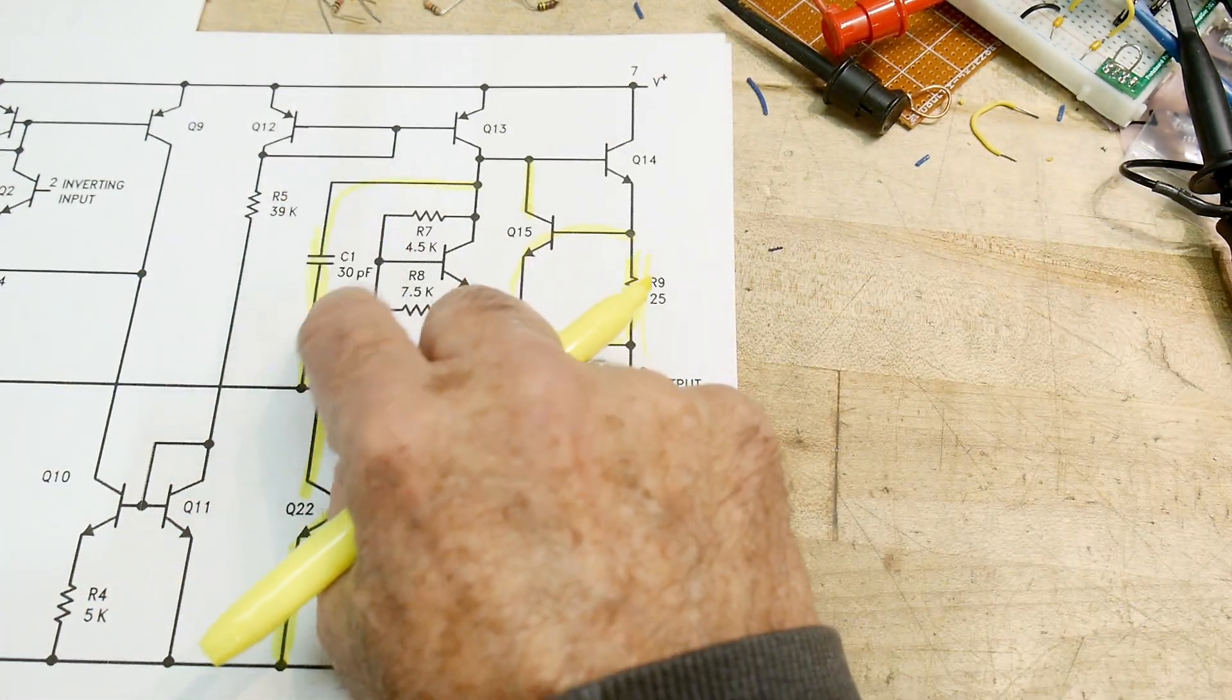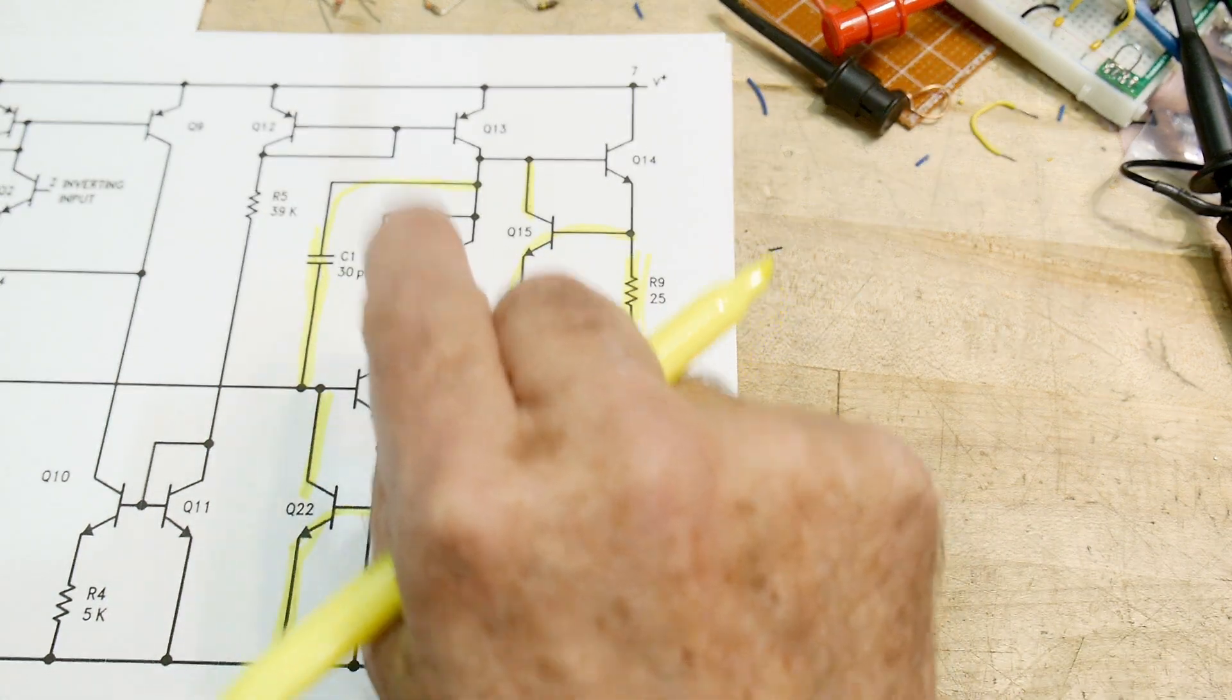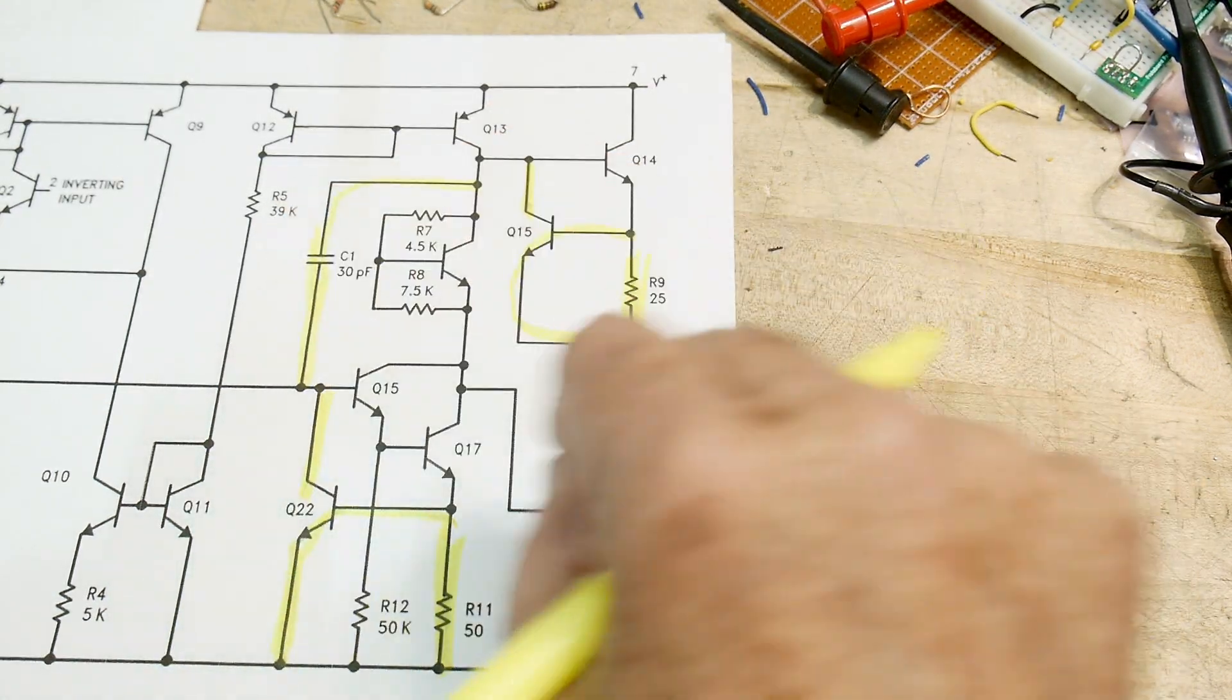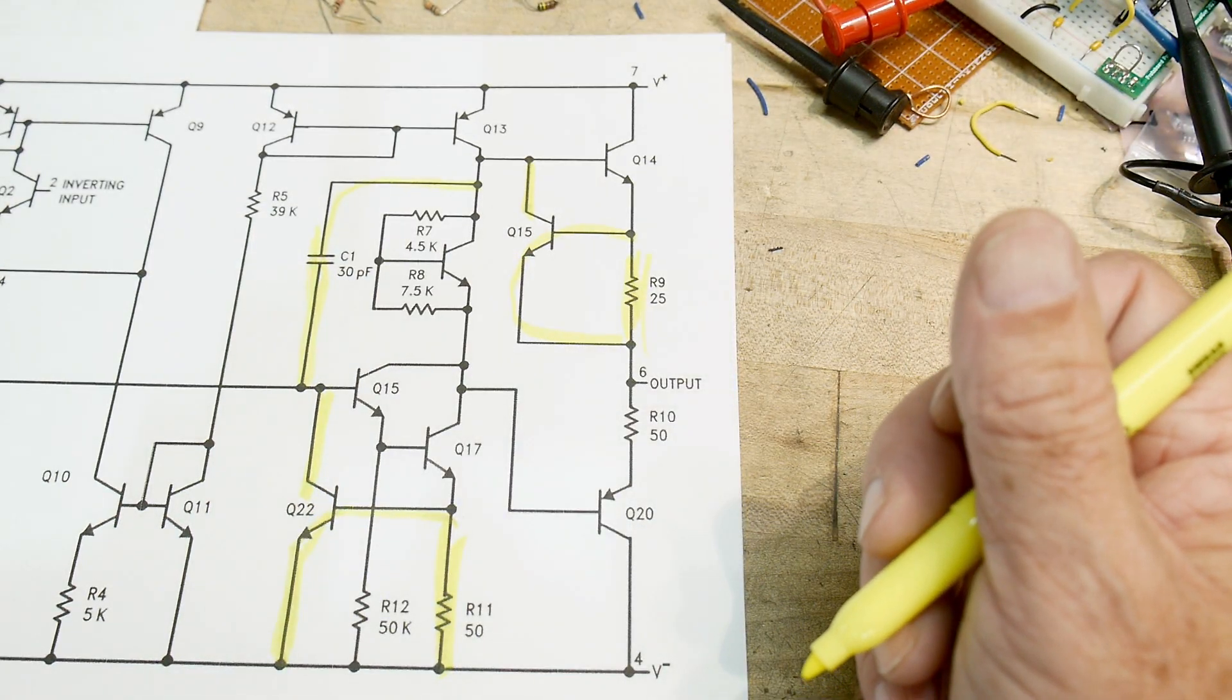And this 30 picofarad, believe it or not, is on the chip. Right in the center of the die is this big patch of metal, and it's actually this 30 picofarad capacitor. So that's pretty interesting.